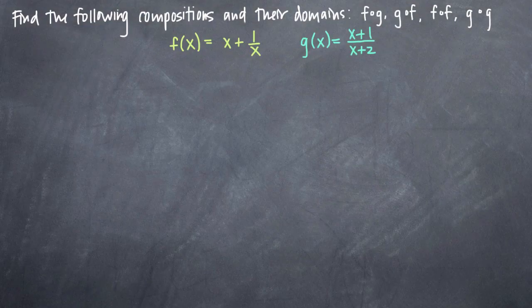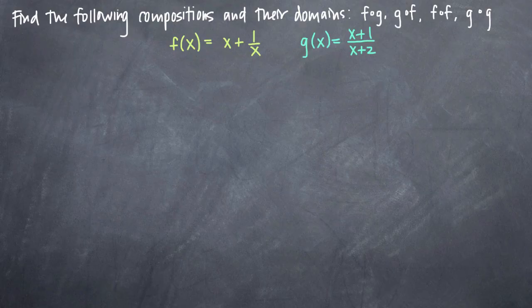In this particular problem, we've been given two functions: f of x equals x plus 1 over x, and g of x equals x plus 1 over x plus 2. We've been asked to find the compositions f of g, g of f, f of f, and g of g, and once we find the compositions, we've been asked to state their domains.